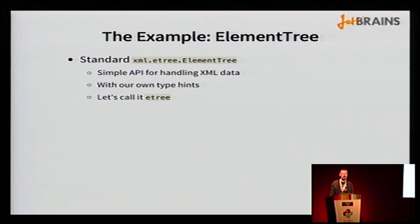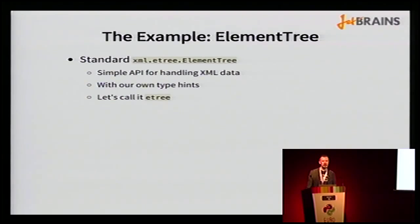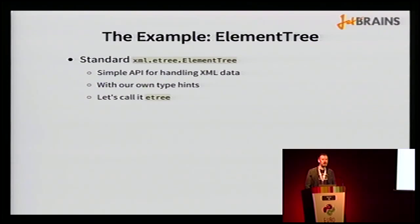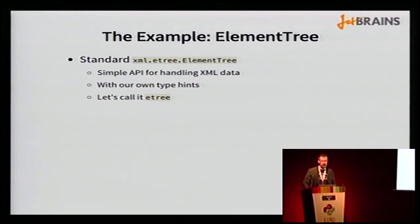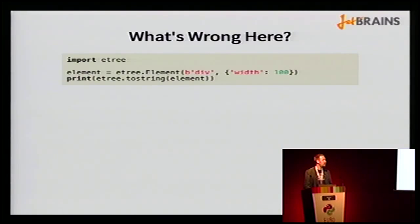Let's pick an example for understanding type hints. I've chosen the ElementTree library — part of the standard Python library — which handles XML data, parsing XML with an API nicer than the standard DOM API. For brevity, let's call it eTree — our own modified version. Later I'll show how to deal with the library without modifying it.